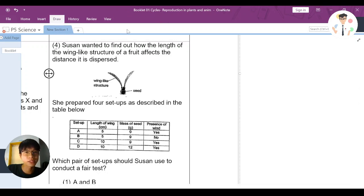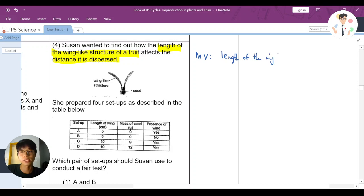A very important part here you need to highlight is how the length of the wing-light structure of the fruit affects the distance it is dispersed. If I want to put into an experiment system, the manipulated variable is the length of the wing-light structure of a fruit. Now the responding variable is the distance dispersed.